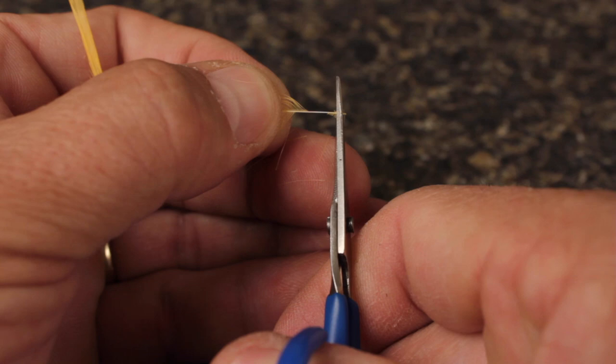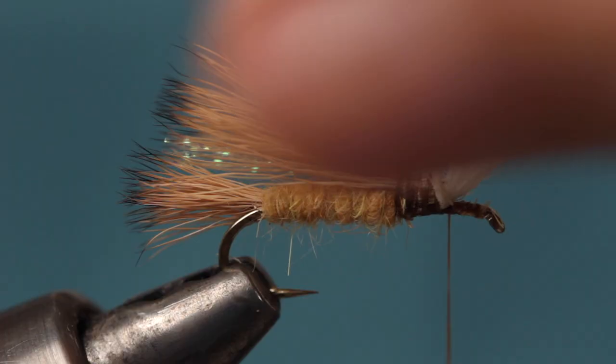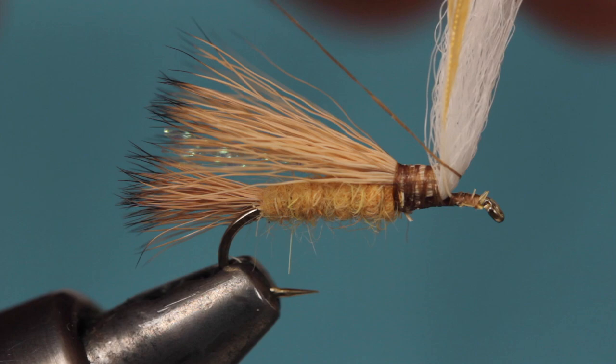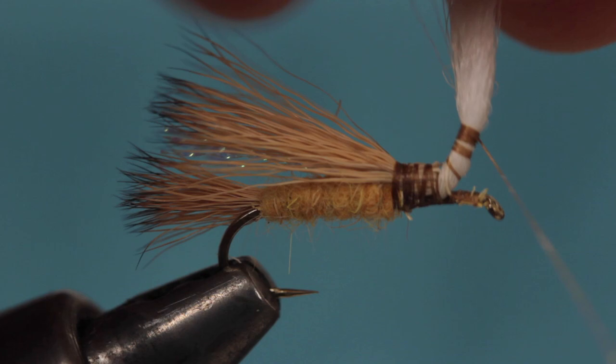While pulling the post back, lay the hackle stem on the near side of the hook and take thread wraps over top of the anchor to secure it. Continue taking wraps back to the base of the post and then start working your way up the post securing the hackle stem to it as you go. After you've gone about a quarter inch up the post, make wraps back down and end with your tying thread positioned all the way back at the base of the elk hair wing.